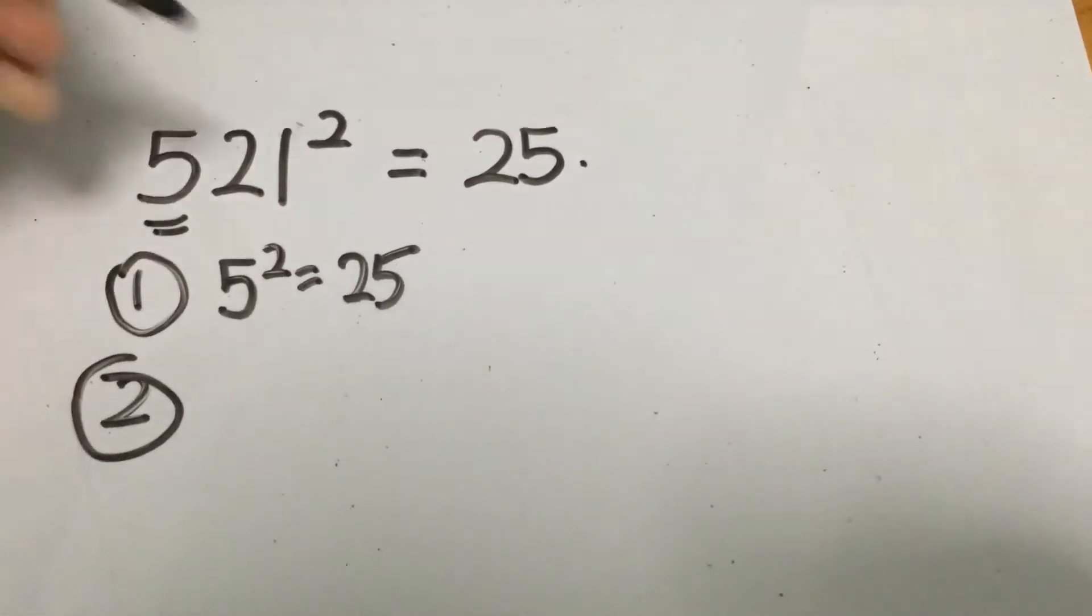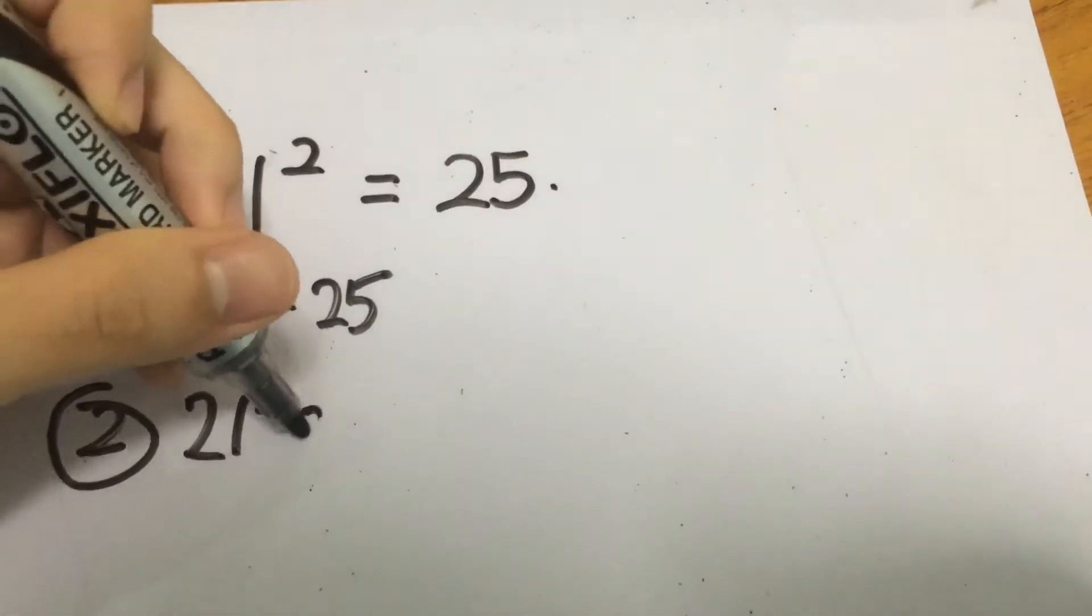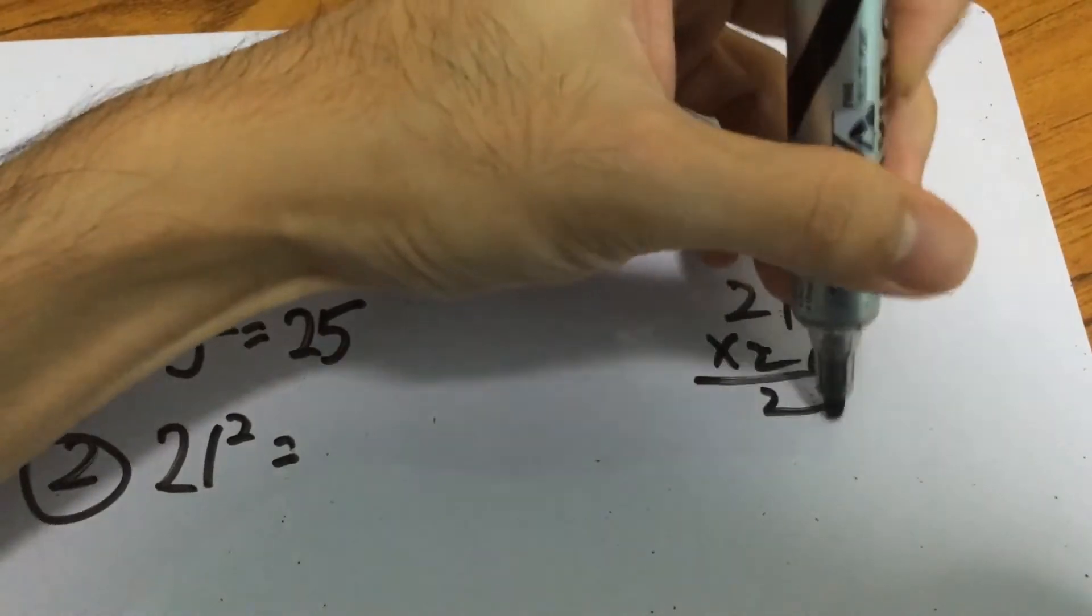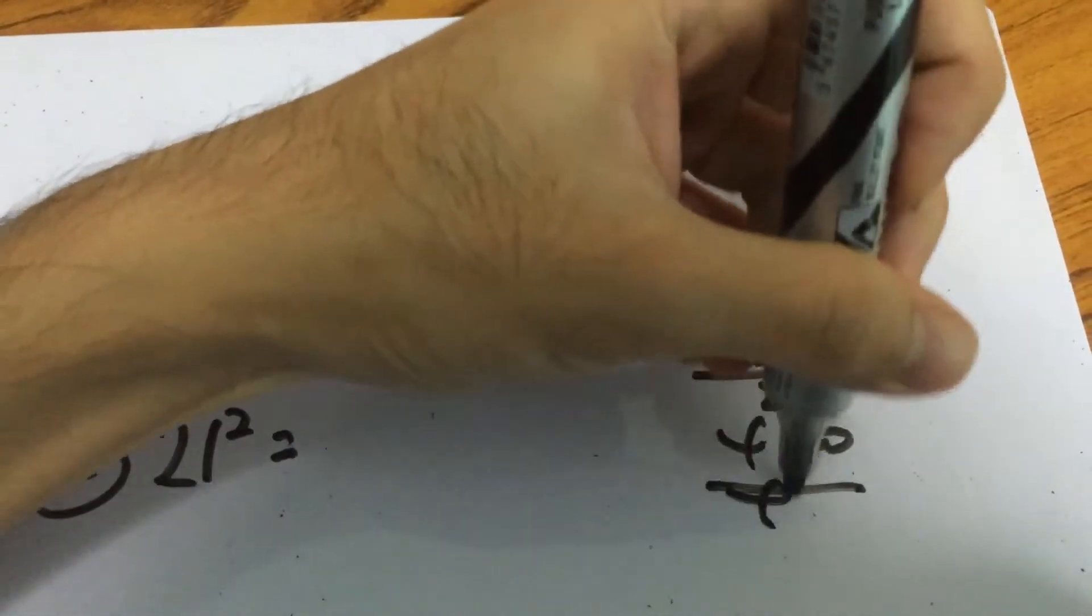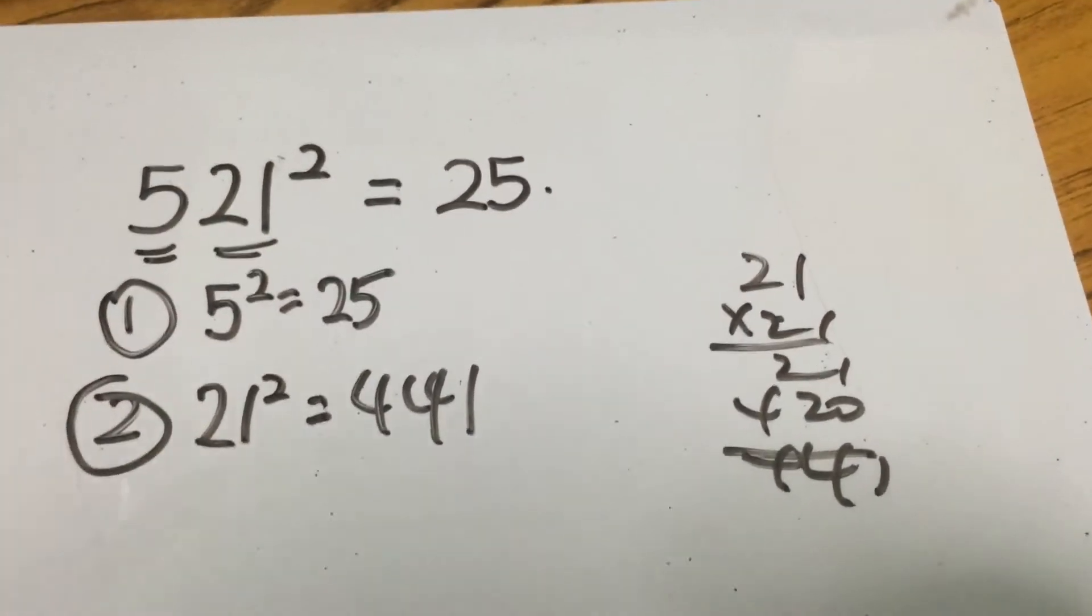And the second thing is that we will take this 21 and we square it. This is going to be a pretty big number. So 21 times 21, 420 and it's 441. So as you know 21 squared gives you 441.